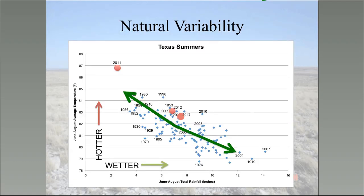What this tells us is that natural variability has a big effect on our summertime conditions. They're really serious to forecast because there's such a big range of conditions that can happen, and we don't have a strong signal that develops ahead of time for summertime forecasting. But the general upward drift in temperatures, I think, is associated with climate change.